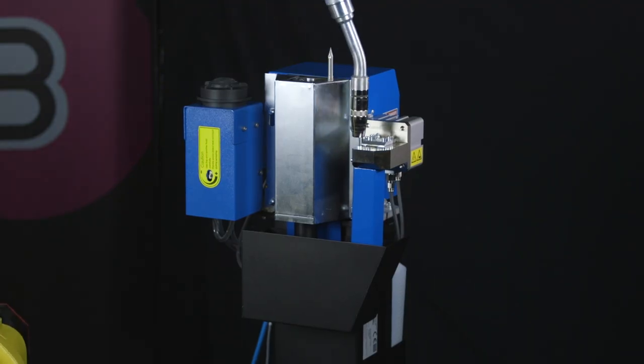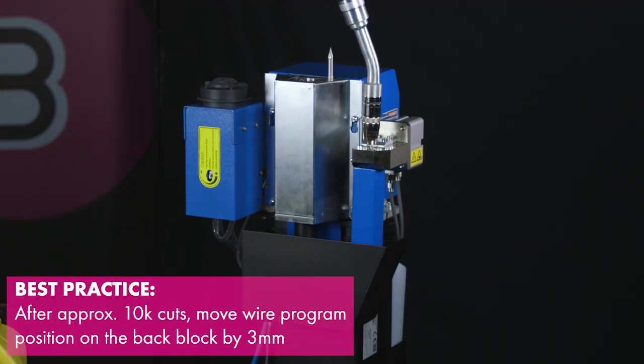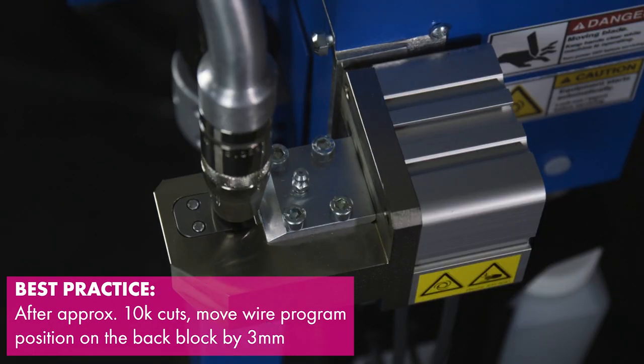I would recommend that in order to get the most use from your wire cutter, move the wire program position on the back block by roughly three millimeters after 10,000 or so cuts, as this will extend the life of your shearing blade. Ideally, this will provide you 40 to 50,000 cuts before needing to be replaced.